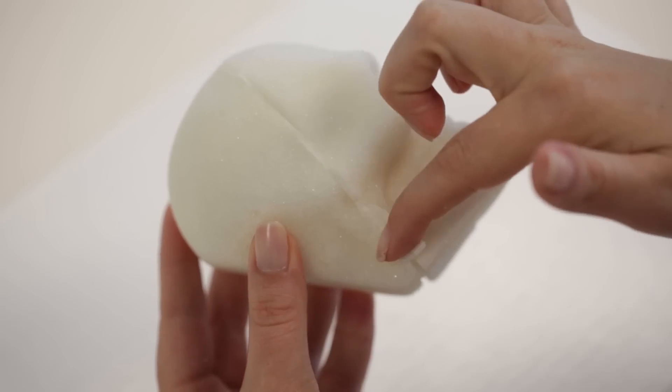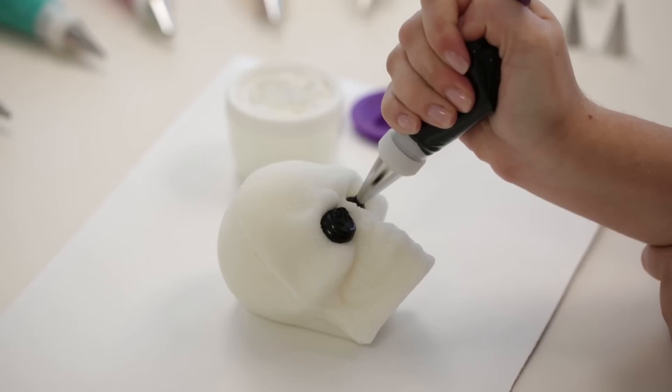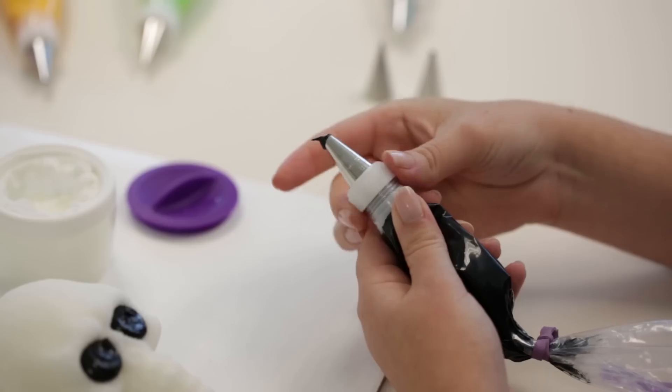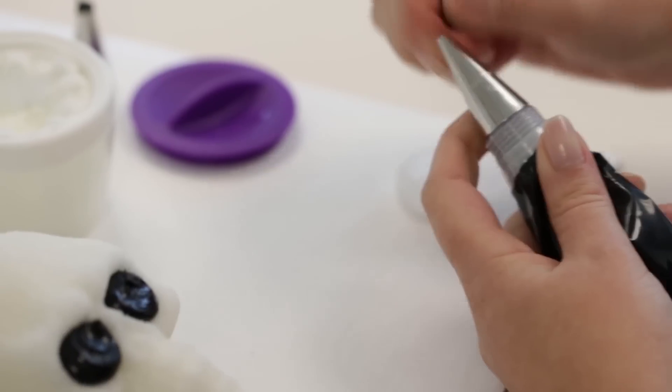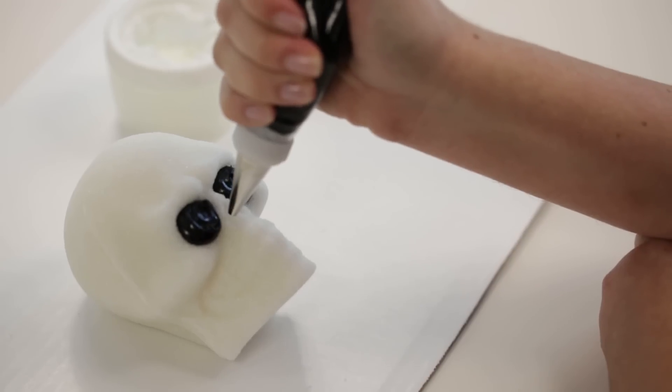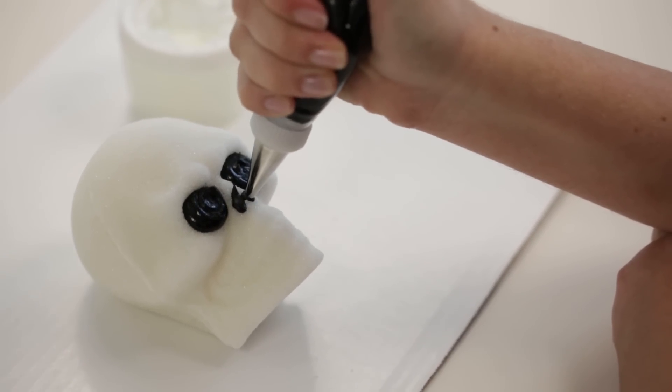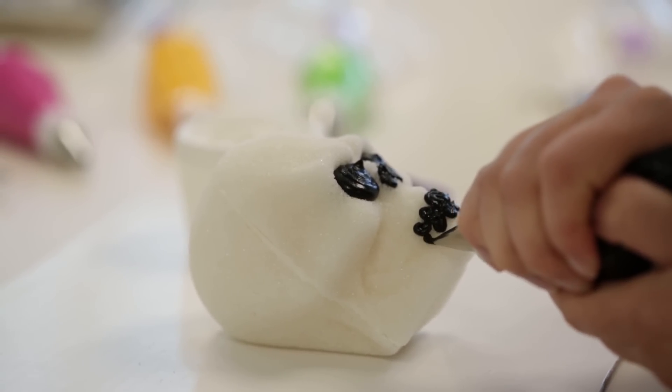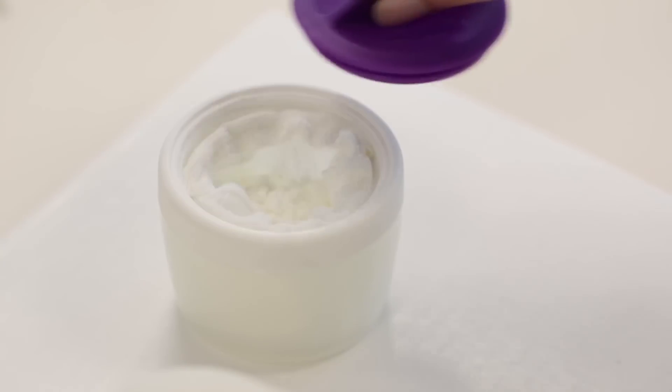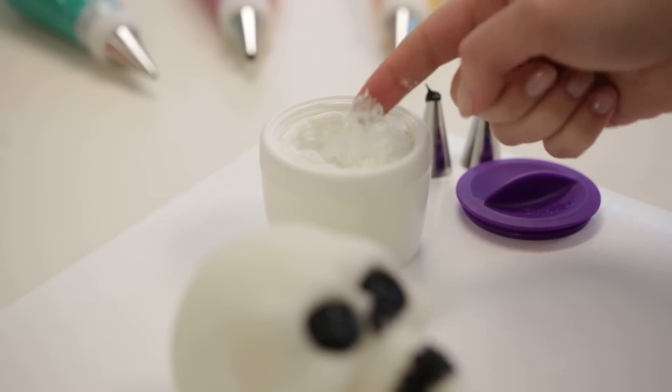Now it's time to decorate your skull. Use black icing and tip 8 to fill in the eye sockets. Change the tip on your black icing to tip 6 and fill in the nose cavity and teeth. Dip your fingers in cornstarch to lightly smooth out the icing in the eye sockets.